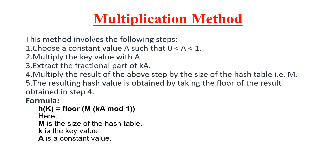Hello everyone. In this class I will explain about the multiplication method. In the multiplication method, some steps are there. First step: choose a constant value A in the range 0 to 1. Then multiply that constant value with the given key. Third step: extract the fractional part of K×A. Fourth step: multiply the result by the table size. Fifth step: take the floor value. Using this formula you can calculate the index and store the given element.